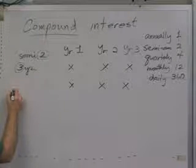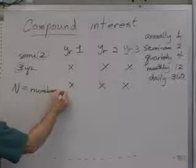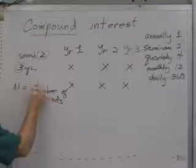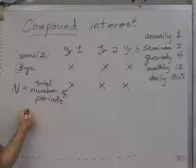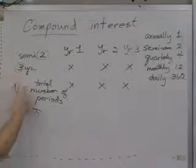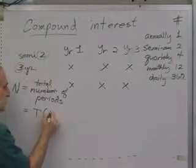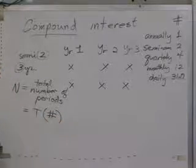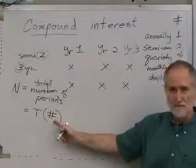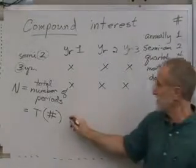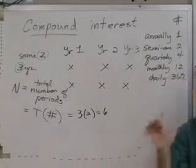So one of the numbers that we're always interested in, we call big N. This is the total number of periods that we compounded. The total number of periods. We always want to find that number. And we find it by taking the time in years, three years, times, and I'm going to call this, I'm just going to give this the number sign. That's the number of times we're compounding per year. So to find the total number of periods, we take the time in years and multiply it times the number of times per year that we compounded. So in this case, three years, semi-annually, that's six periods where we're going to have interest added to our account.